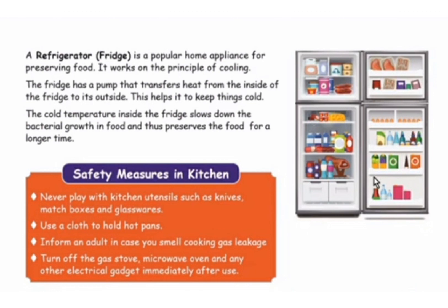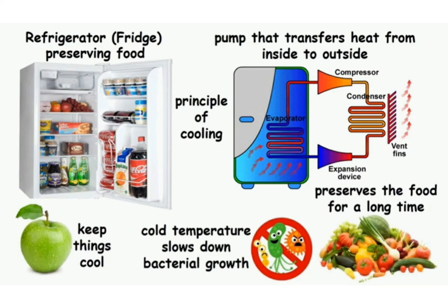Page number 108 — the refrigerator, that is the fridge. A refrigerator is a popular home appliance for preserving food. It works on the principle of cooling. The fridge has a pump that transfers heat from the inside of the fridge to its outside, and this helps it to keep things cold.